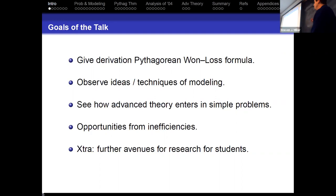So the goal is to give a derivation of the won-loss formula. We're going to observe ideas and techniques of modeling. And that's one of the skills I want you to get out of this class: how do you take a real world problem, create a mathematical model, and then do something with it? How do you gather the statistics to analyze it, to evaluate, or to find the values of parameters?